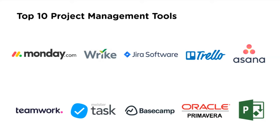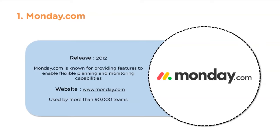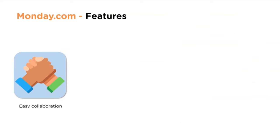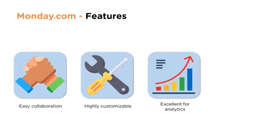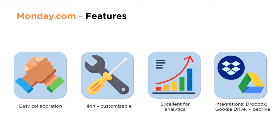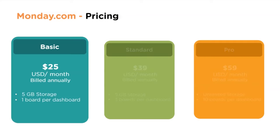Let us look at these one by one. monday.com was released in 2012 and is known for providing features to enable flexible planning and monitoring capabilities. The website is www.monday.com. This tool is used by more than 90,000 teams across the globe. monday.com features include easy collaboration, high customizability, excellent analytics, and integration with Dropbox, Google Drive, and Pipedrive.